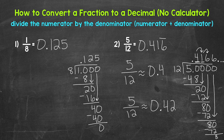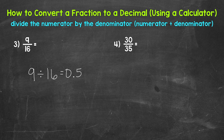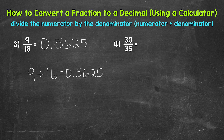Let's move on to numbers three and four. For number three, we have nine sixteenths — 9 over 16. We need to divide the numerator by the denominator, so plug in nine divided by 16. This gives us 0.5625 — 5,625 ten-thousandths. So nine sixteenths equals 0.5625, or 5,625 ten-thousandths.